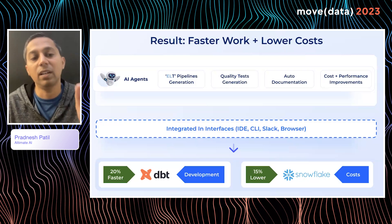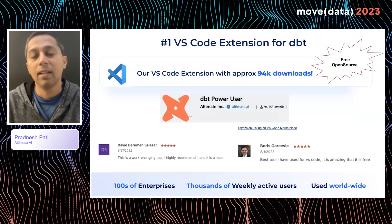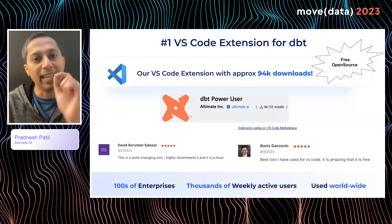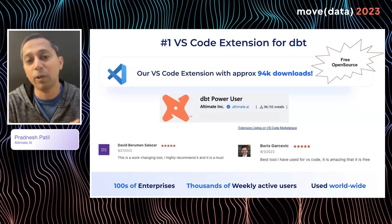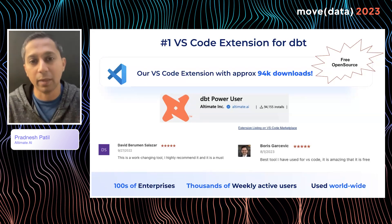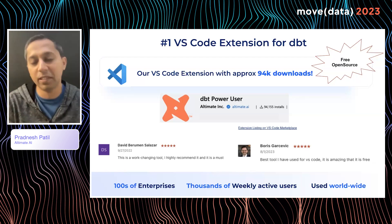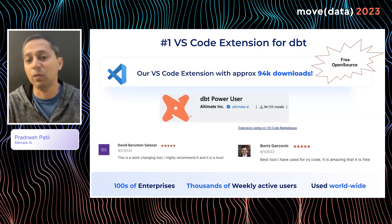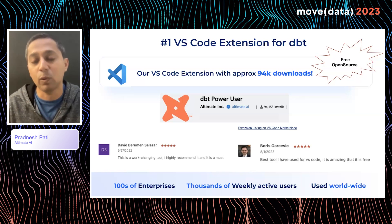Let's dig deeper into that 20% faster dbt development. First and foremost, we have made Data Pilot available as a VS Code extension. Our VS Code extension, named dbt Power User, is very popular on the VS Code Marketplace — it has been downloaded 94,000 times so far, used by hundreds of enterprises and thousands of weekly active users. Reviews say it's a world-changing tool. It's a free and open source extension — I highly recommend downloading it from VS Code Marketplace and start using it.